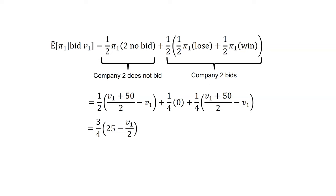That in turn equals a half times, V1 plus 50 over 2 minus V1. That is the profit they get if they win if Company 2 doesn't bid. Plus a quarter times zero. That is their profit if they lose the auction, where they pay nothing.